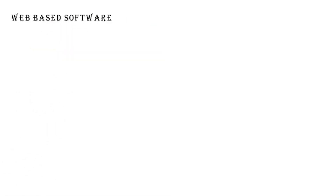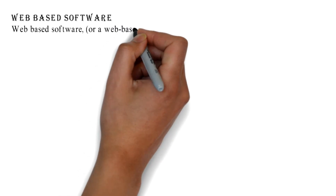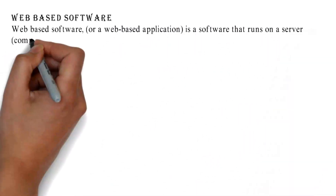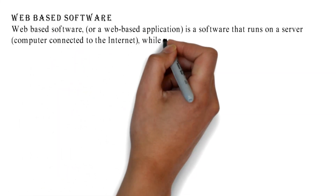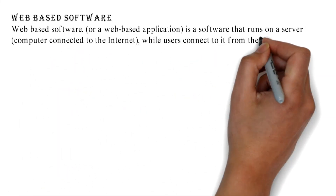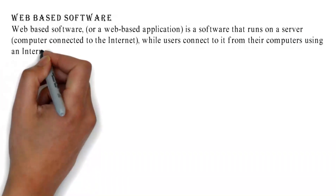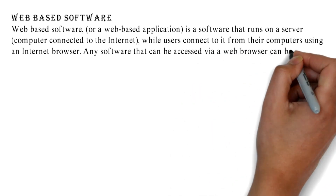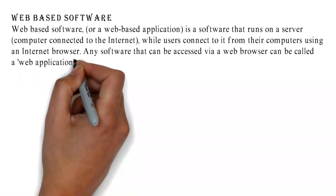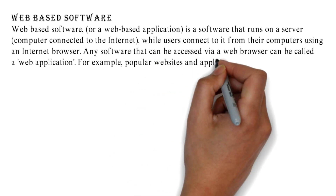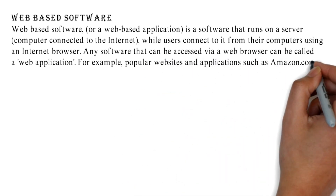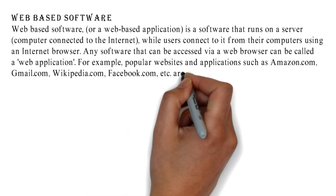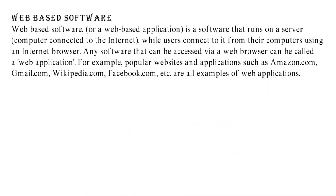Web-based software, or a web-based application, is software that runs on a server connected to the internet, while users connect to it from their computers using an internet browser. Any software that can be accessed by a web browser can be called a web application. Examples include Amazon.com, Gmail.com, Wikipedia.com, and Facebook.com.